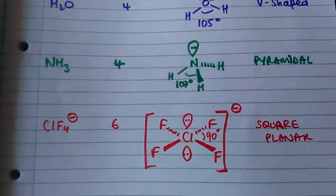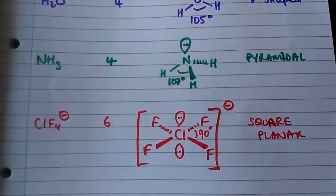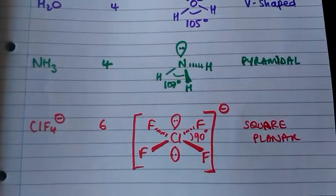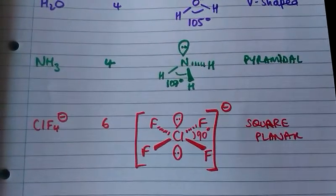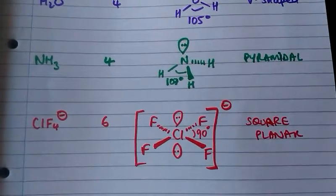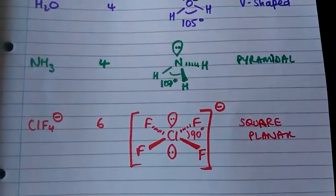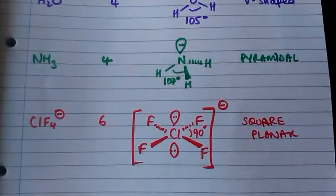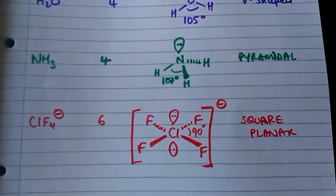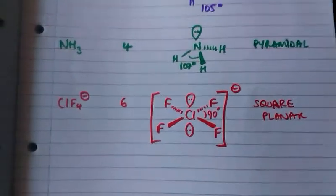Finally, when we have the ion ClF4-, that's got six pairs of electrons: four of them are bonding pairs, two of them are lone pairs, and the bond angle is 90 degrees and that shape is called square planar.